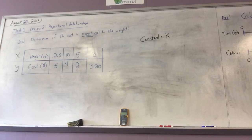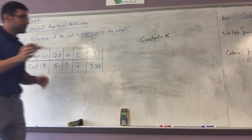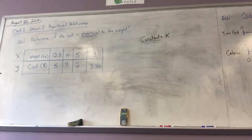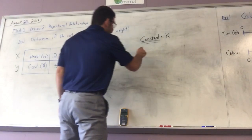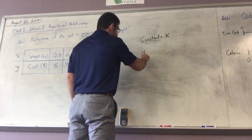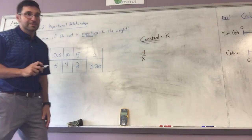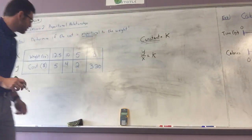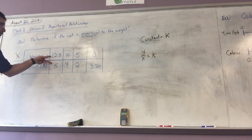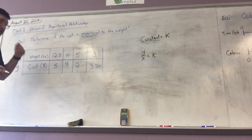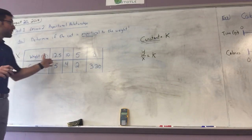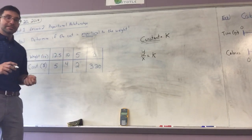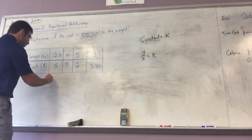To find out if the cost is proportional to the weight, we need to find that constant value of K. To find that constant, we take our y values and divide by our x values. That gives us a constant — remember, constant means unchanging. So when I do that for my first set, I get a value, and for it to be proportional the constant must stay the same the entire time.